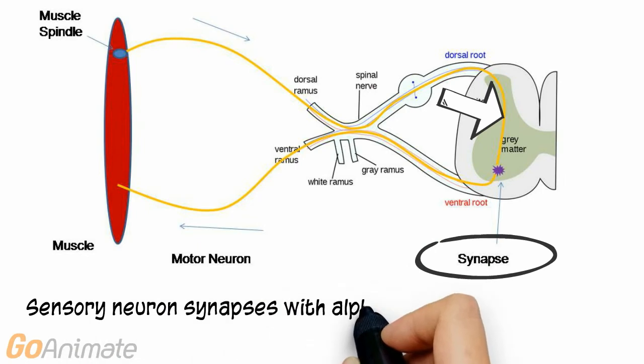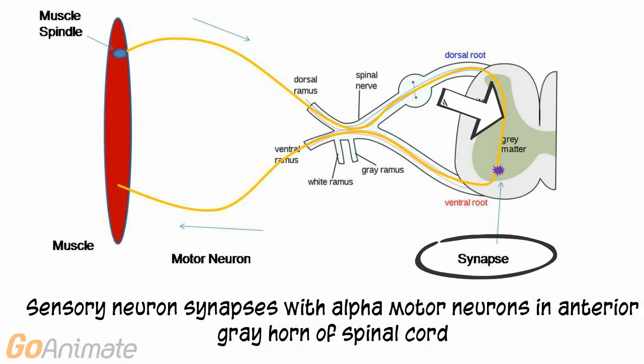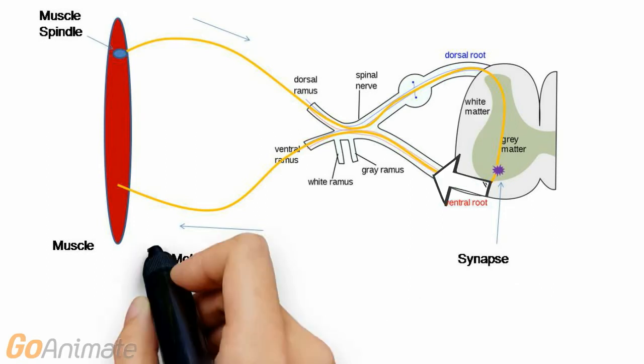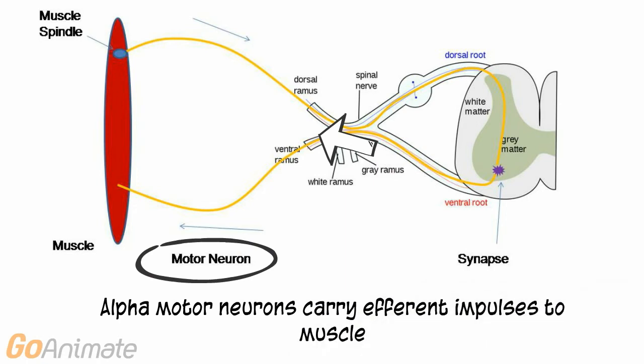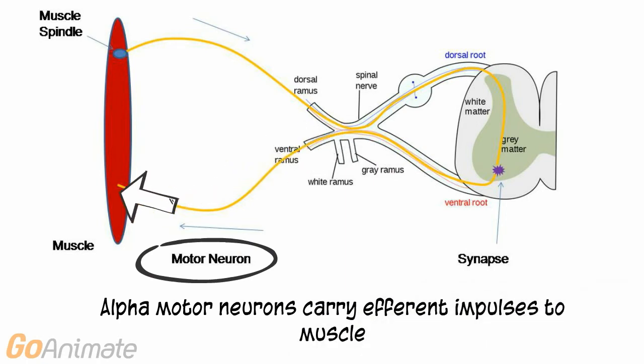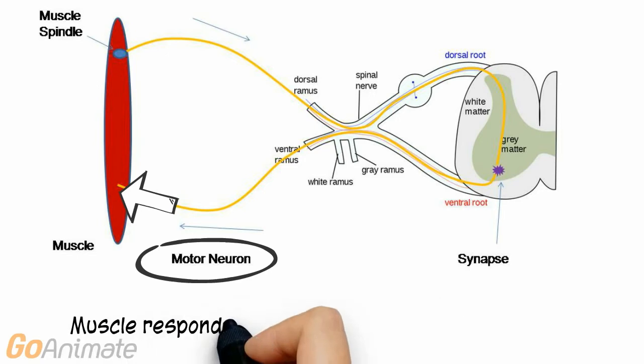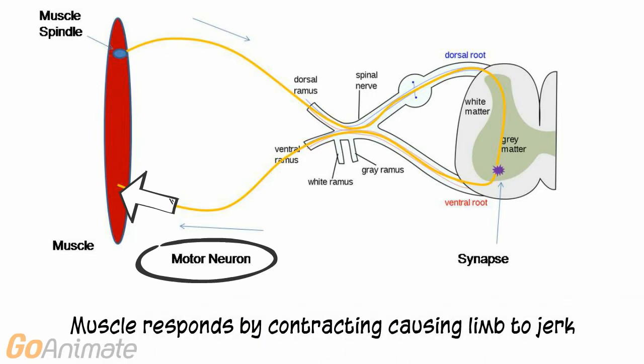The sensory neuron synapses with alpha motor neurons in the gray matter of the spinal cord at the anterior horn. The alpha motor neurons carry efferent impulses to the muscles, and the muscle responds by contracting, causing the limb to jerk.